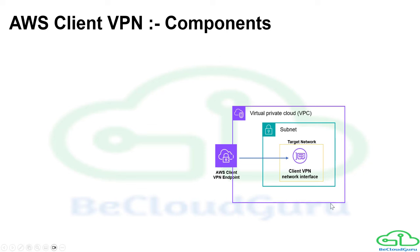After that you have the Client VPN network interface. Once you create the Client VPN endpoint and associate it with a subnet in a VPC, that subnet becomes the target network. Within the target network, AWS creates a Client VPN network interface. All traffic sent from the AWS Client VPN endpoint talks to resources through this interface. SNAT comes into the picture where the source IP from the client CIDR range is translated to the Client VPN network interface IP.